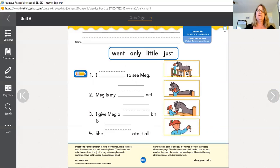So we would go to three and let's see. I give Meg a blank bit. I give Meg a blank bit. Number four, she blank ate it all. So we would try and I want you to try on your own to see which of these make sense.